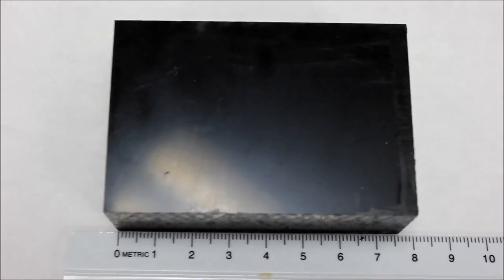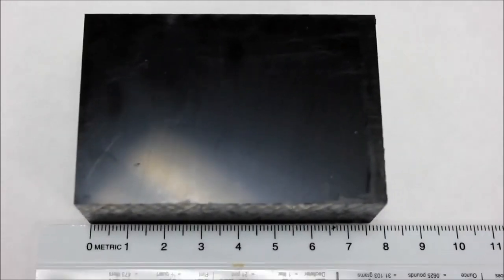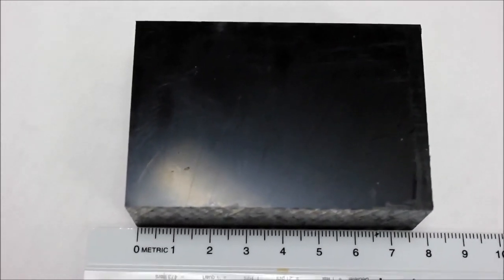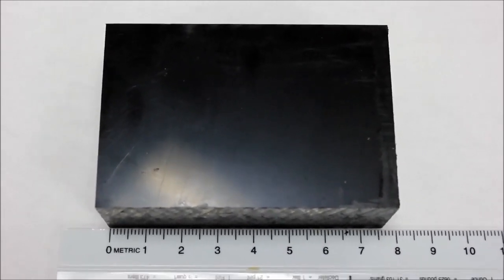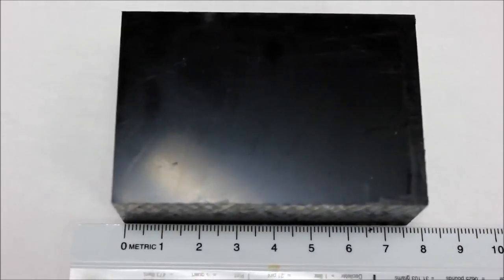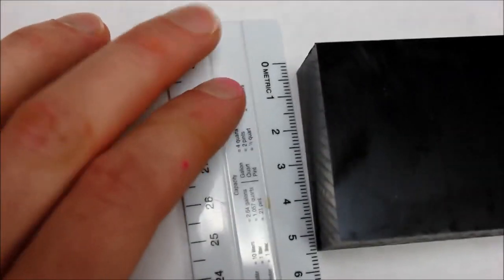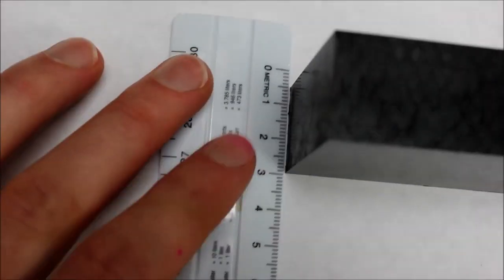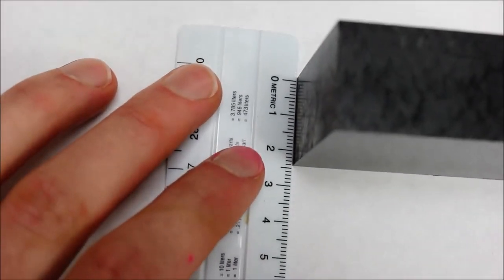Now another way that we can take the volume is by taking the length times the width times the height. And that's mostly for rectangular prisms or cubes. So for this one, we can take the length at about 7½, the width at about 5. And if I turn it sideways here, I can get the height. The height is about 2½.